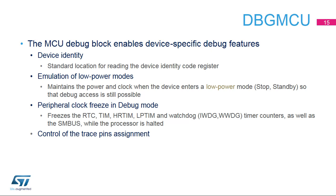The MCU debug component provides support for MCU identification, low power modes, clock control for timers, watchdog, I2C, and FDCAN during a breakpoint, as well as control of the trace pin assignment. The DBG ID code register provides the device ID and revision codes in STM32 standard format. This code is accessible by the SWJDP or by user software. Low power mode emulation means that the debugger connection is not lost when entering a low power mode. It eliminates the need to replace the low power entry command — for example, WFI or WFE — with a while loop.